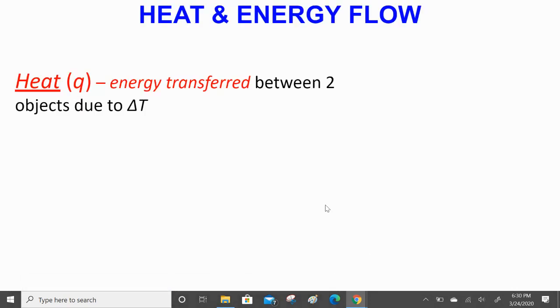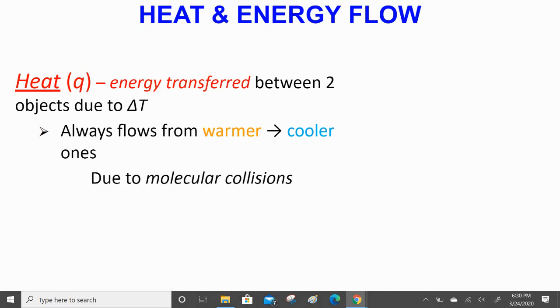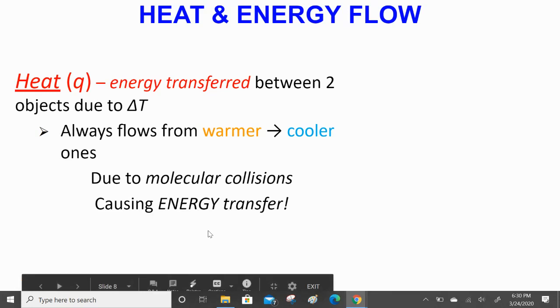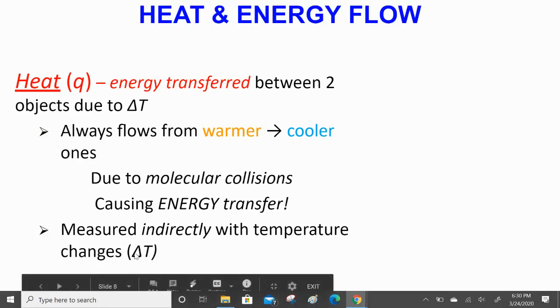Heat and energy flow. We need to start with some basics. Heat is represented by the letter q, which we'll be solving for in the equation. Heat, or q, is a measurement of energy transferred between two objects due to change in temperature. It always flows from warmer to cooler objects due to molecular collisions causing energy transfer. It's measured indirectly with temperature changes, delta T.